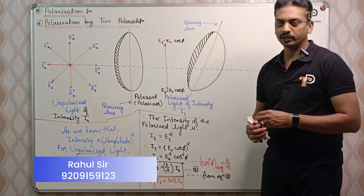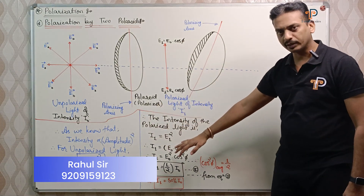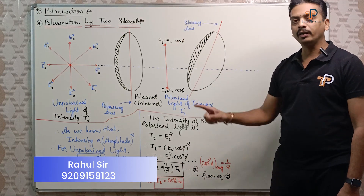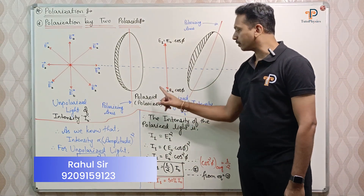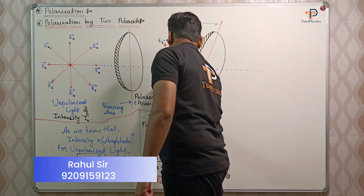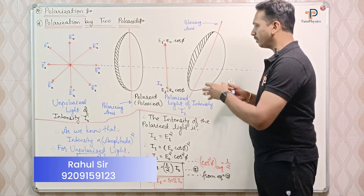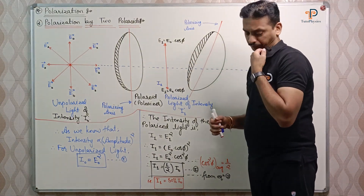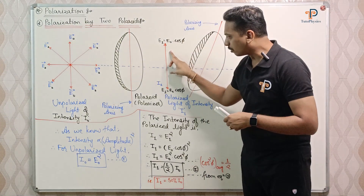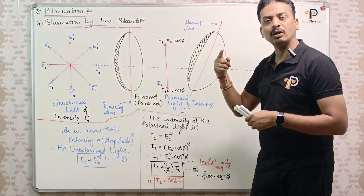In this video we will discuss polarization using two polaroids, continuing the same diagram. I1 is equal to 50% of I0 — 50% intensity after first polarization. I1 is the intensity of the polarized light after the first polaroid. Now, the second polaroid is applied with a horizontal polarizing axis, and the output of the first polarizer becomes the input for the second polarizer. The intensity becomes zero.